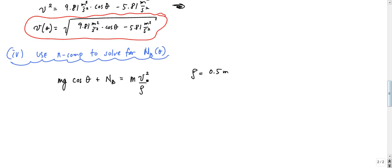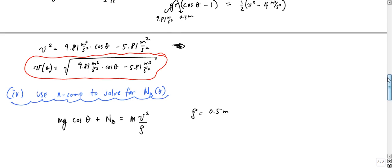I'm going to solve for N_b, and I already have an answer for v squared — that's my v squared — and I'm just going to plug it in there. So N_b is equal to m over rho times (9.81 meters squared per second squared times cosθ minus 5.81 meters squared per second squared) minus mg cosine of theta.